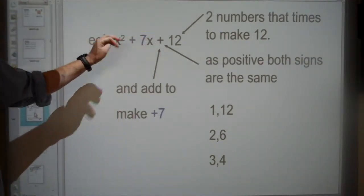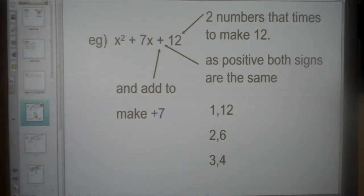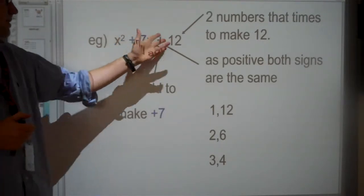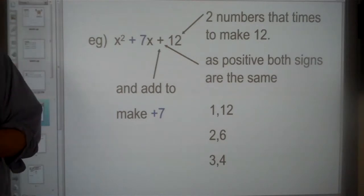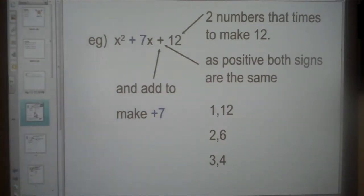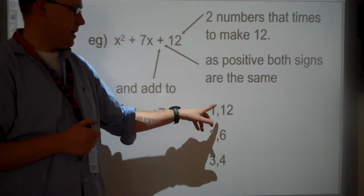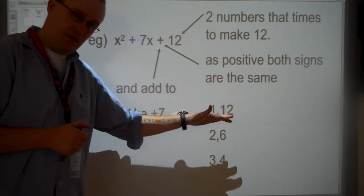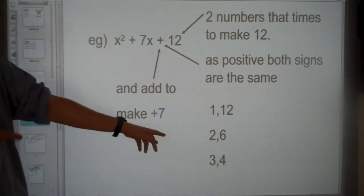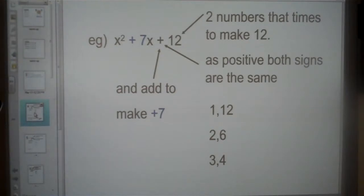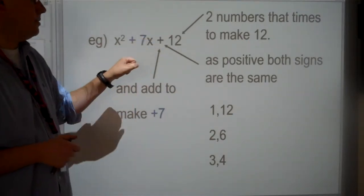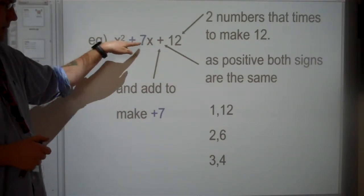If I've got a question like this, I've deliberately highlighted things in different colors to draw our attention to certain things. The first thing I'm looking at is the last number, trying to think of two numbers that multiply together to make 12. If I find 1, I can say how many times does 1 go into 12 - that's one a lot of people forget to do. 2 goes into 12 six times. 3 goes into 12 four times. After you've done each one, try and add the two numbers together and see if it makes this middle number.